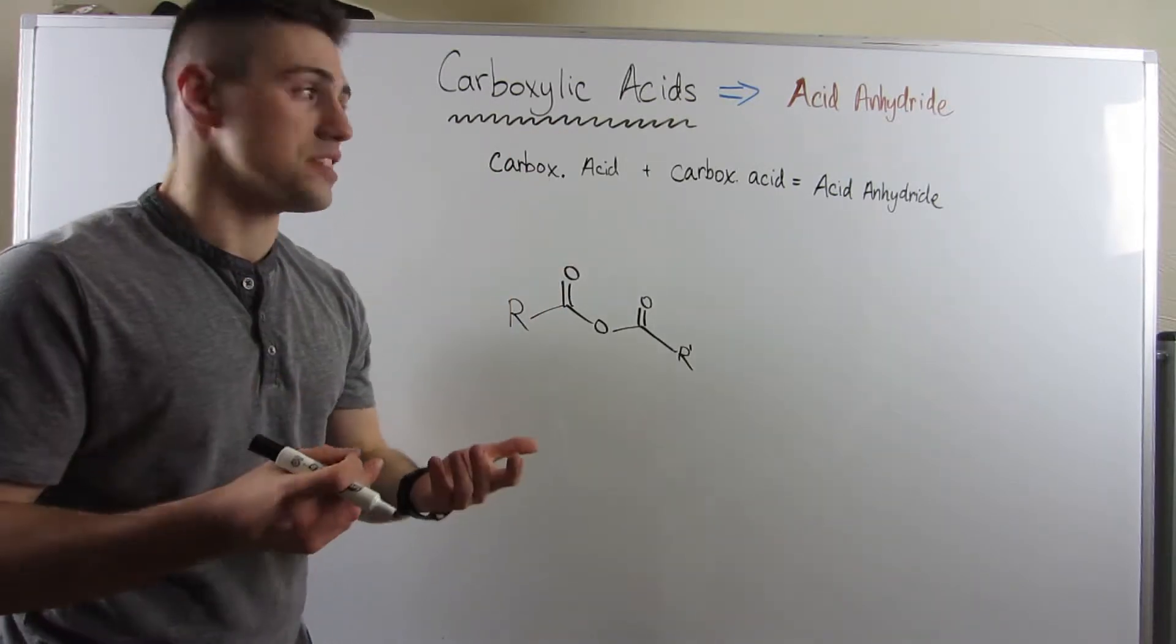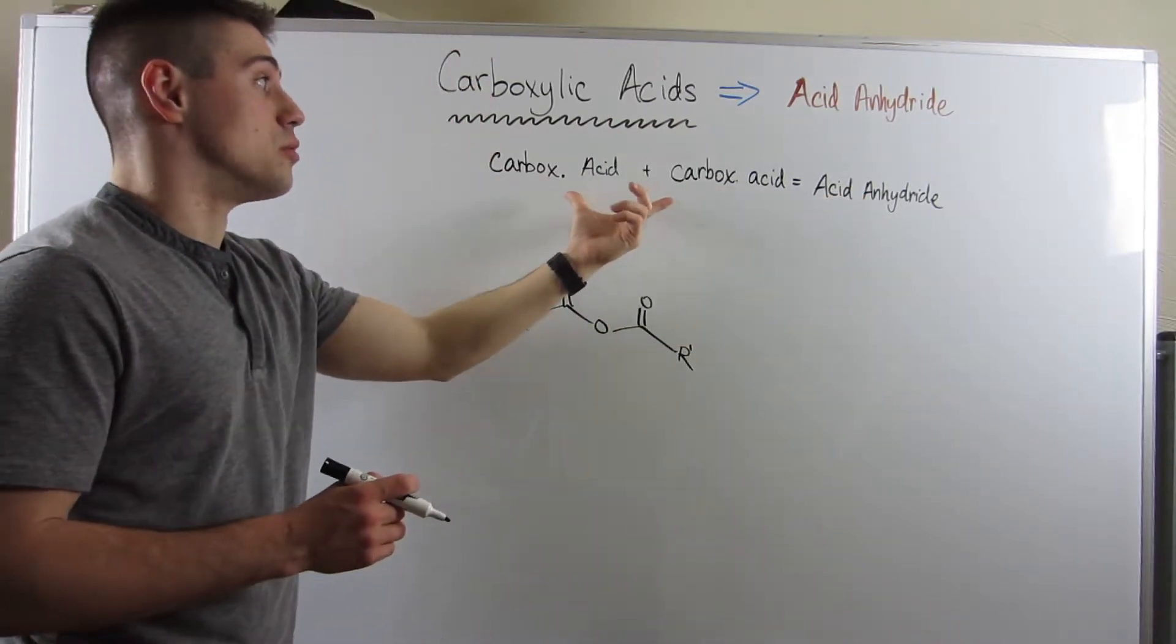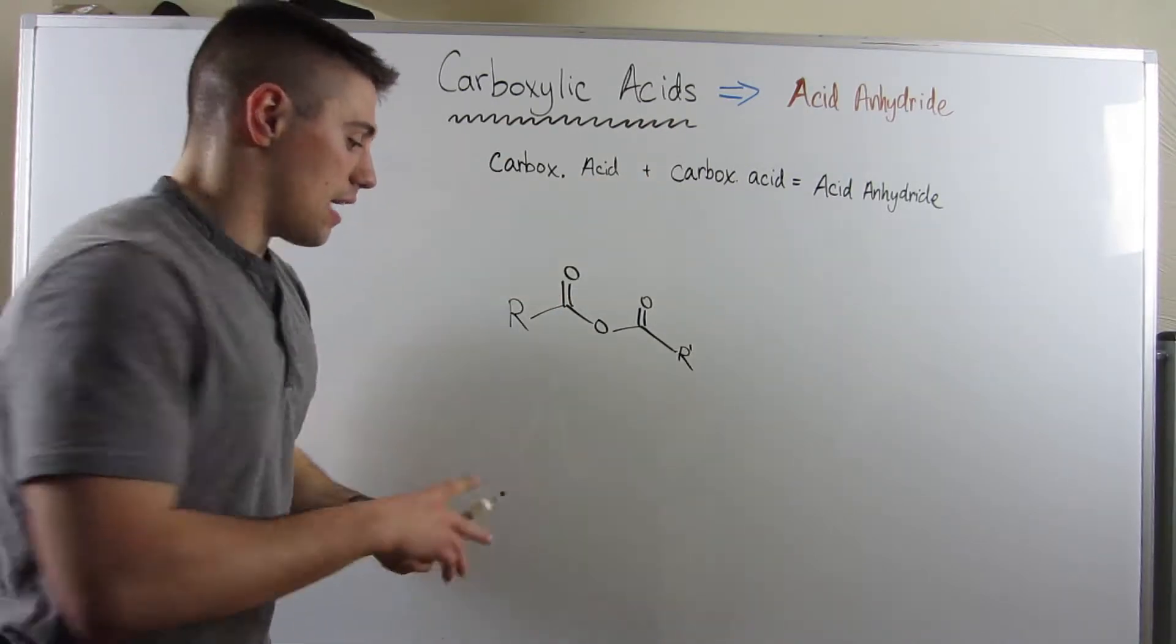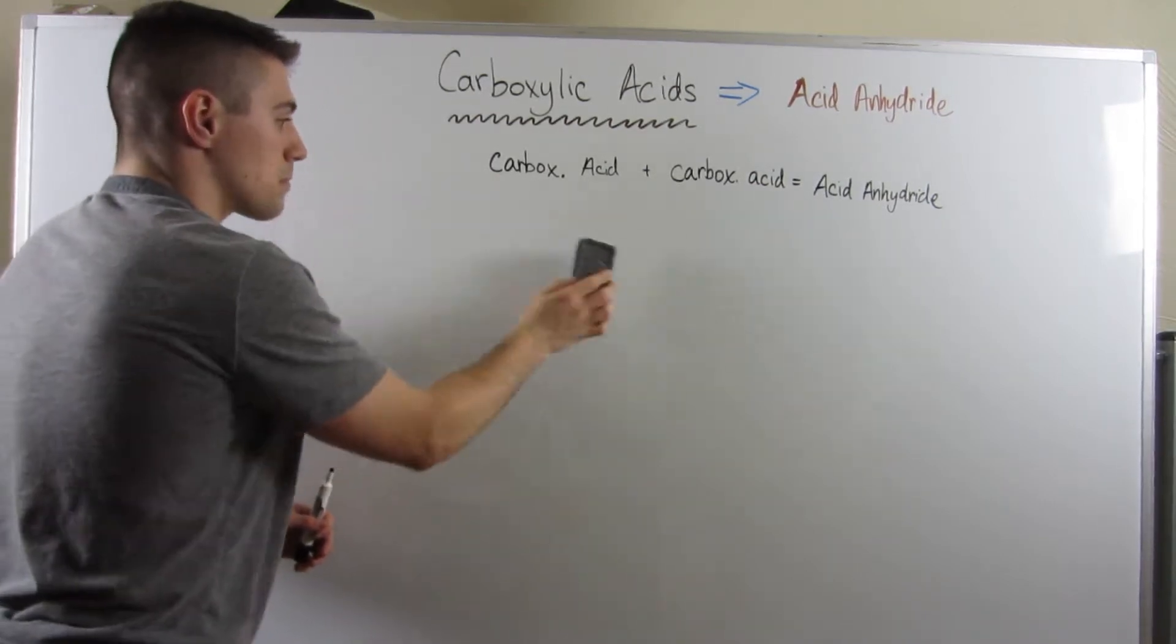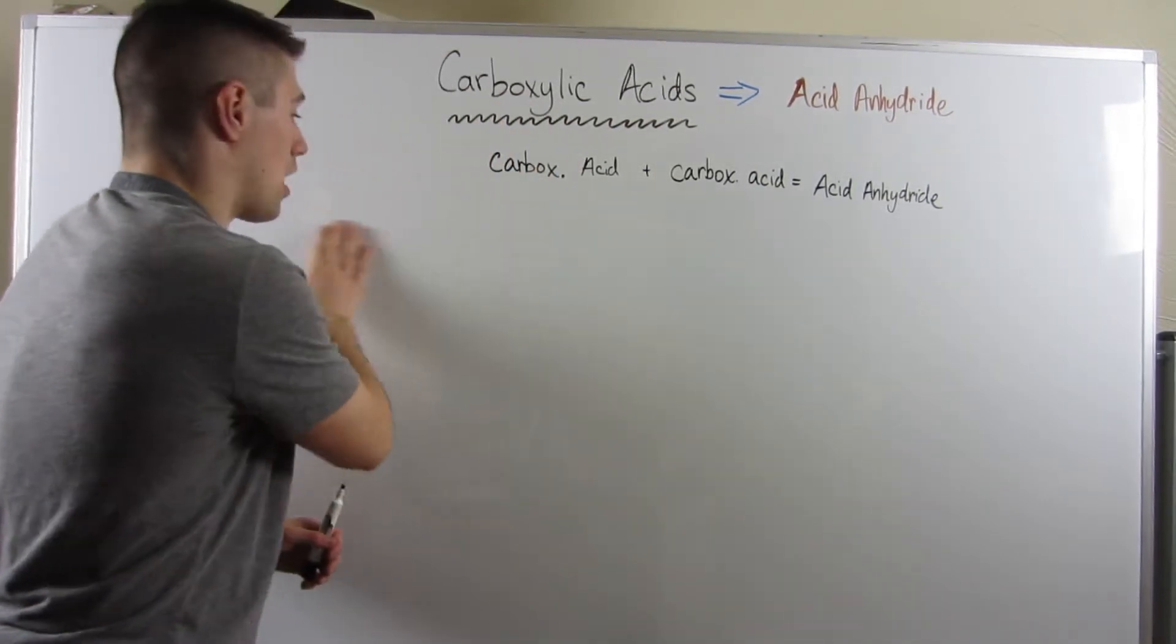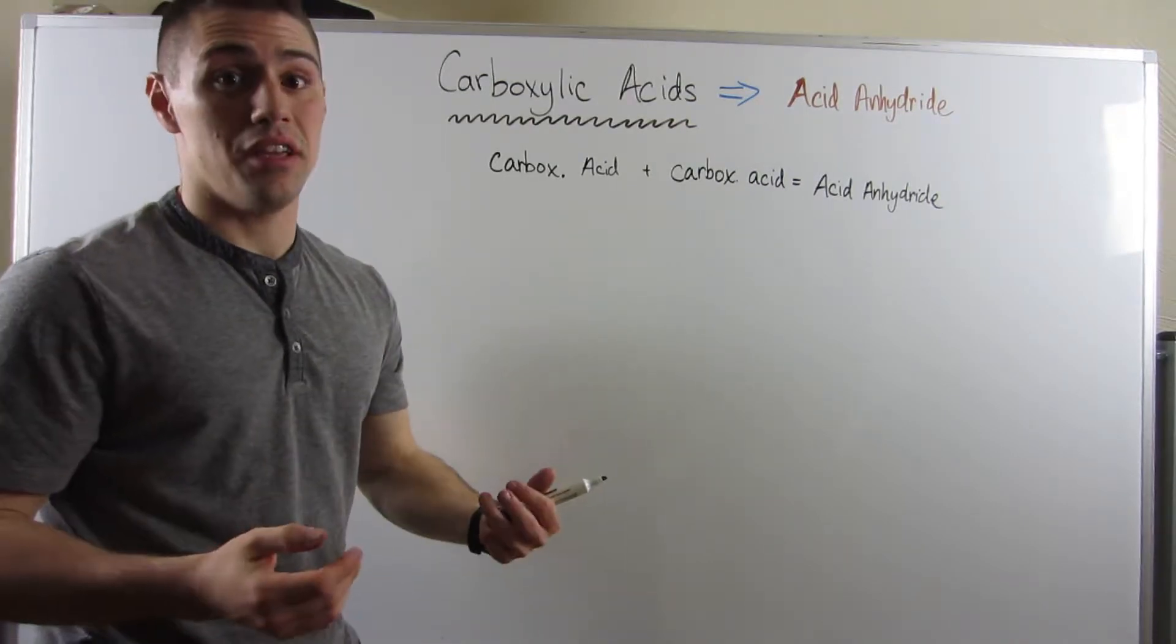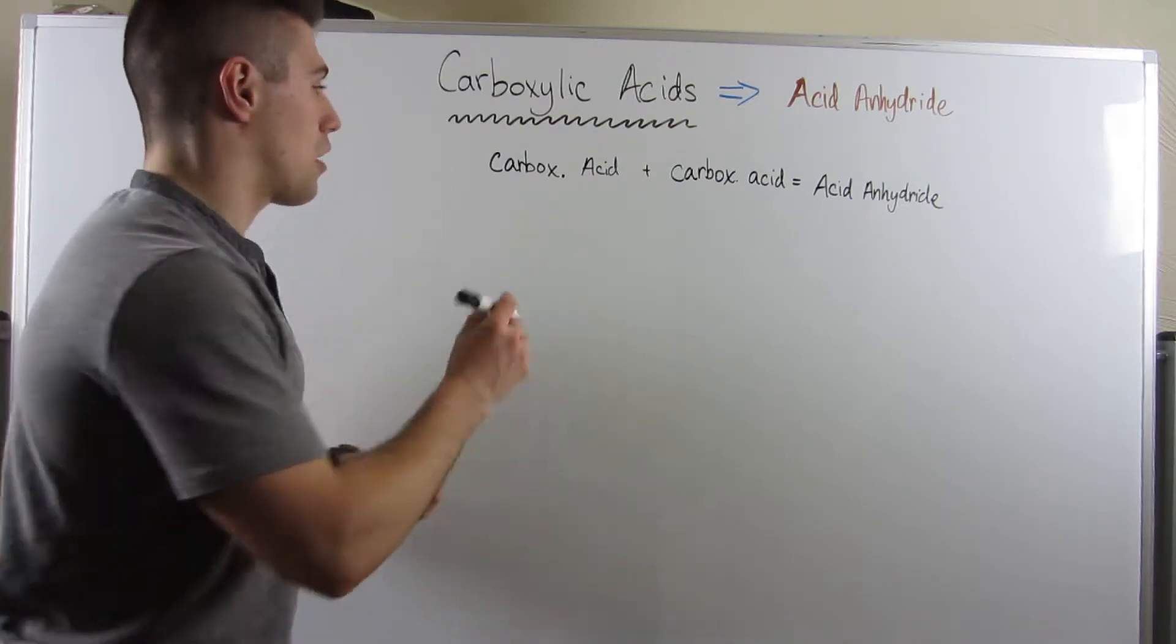And no surprise, if I show you the word formula on how to make an acid anhydride, that's exactly what you do. You smush two carboxylic acids together. Let me show you an example reaction. And honestly, when I draw the mechanism, I think you guys are actually going to be pumped. It's very similar to what we just did.